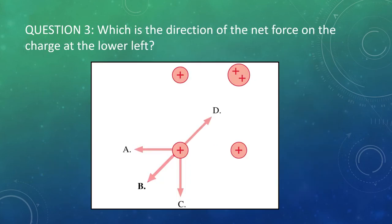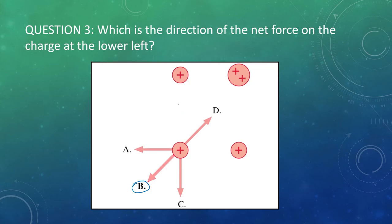Here we see a series of charges — three positive charges and a fourth with arrows pointing off it. We want to know which direction the net force would be on that lower-left charge. Charge 1 is going to repel the positive charge downward; charge 3 is going to repel it to the left; combining those gives down and to the left. The third charge also pushes along that same direction. All three together combine to give a force in the direction of answer B — down and to the left.